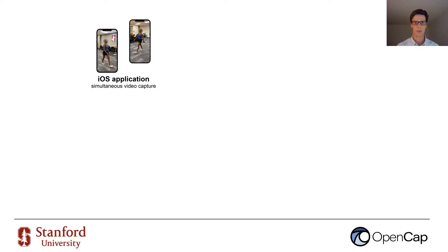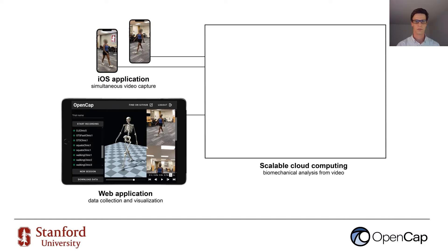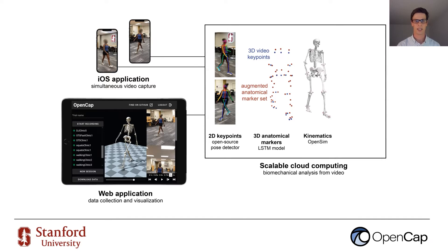Let's look at the components of the OpenCap platform. We have a mobile application that enables simultaneous video capture and a lightweight web application that allows users to collect and visualize motion data. All of the processing happens using scalable cloud computing, and the system meets Stanford University and HIPAA data privacy and security requirements. The first step is running an open-source pose estimation algorithm like OpenPose. We then triangulate these positions to get 3D video key points, shown in blue, but these are insufficient for biomechanical analysis. So we use a deep learning model to augment this marker set to the one shown in red, then run inverse kinematics in OpenSim, and finally generate a muscle-driven dynamic simulation to estimate kinetics.